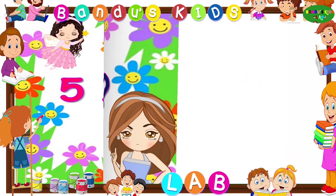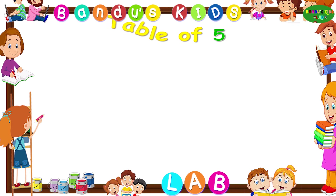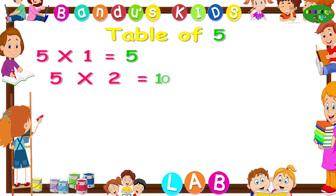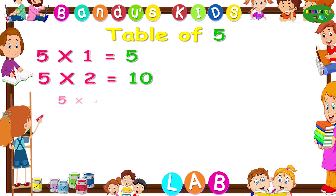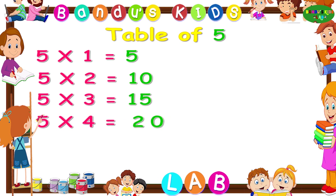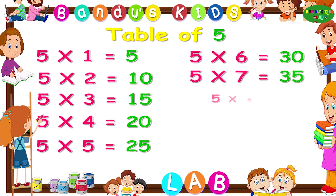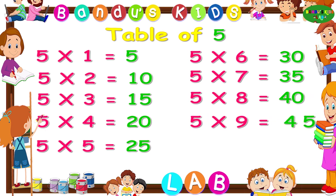Now let's revise the table of five one more time. Five ones are five. Five twos are ten. Five threes are fifteen. Five fours are twenty. Five fives are twenty-five. Five sixes are thirty. Five sevens are thirty-five. Five eights are forty. Five nines are forty-five. Five tens are fifty.